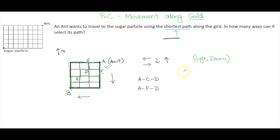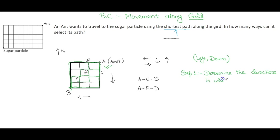To calculate how many shortest paths there are, we follow a few steps. Step one is to determine the directions in which we can travel. In this example, it is left and down. That should always be our step one.